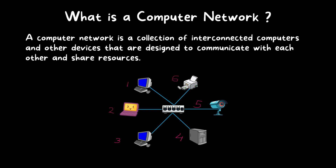This is the definition of a computer network — a collection of interconnected devices. The main purpose of a network is to provide communication between devices and share resources. For example, a laptop can access a shared folder from the server, a PC can communicate with another PC, the camera can record videos and send them to the server's shared resources, and a PC can send a printout to the printer. All devices can communicate and share resources between them.